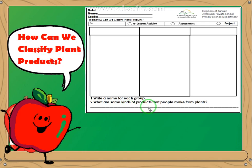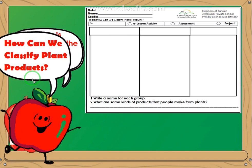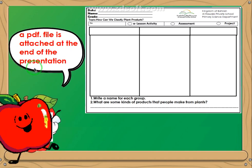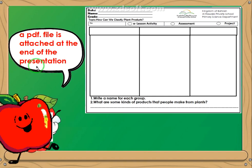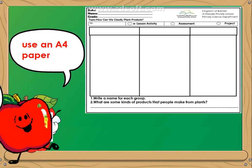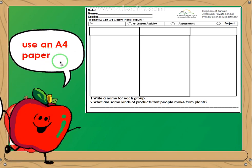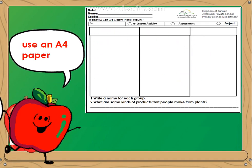Now, this will be your template. You cannot find this in your book. So, what you're going to do is print the PDF file attached at the end of the presentation. If not, don't be sad — you can also use an A4 paper to serve as your template for this project or activity.